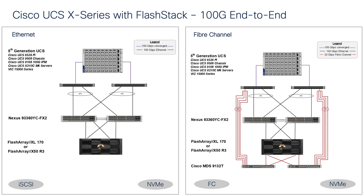Fabric Interconnect is 6536, which has 36 ports of 100 Gig providing 7.4 terabits per second bandwidth per FI and 14.84 terabits per second per unified fabric domain. This is a unified fabric wherein a single wire connected between a blade chassis to Fabric Interconnect carries management, Ethernet, and storage traffic.